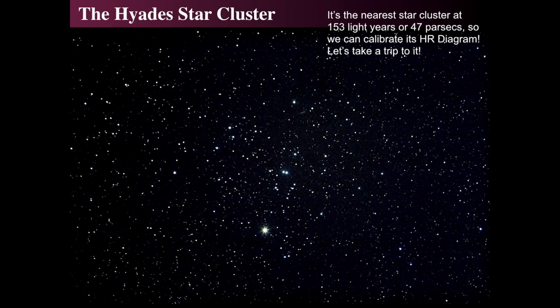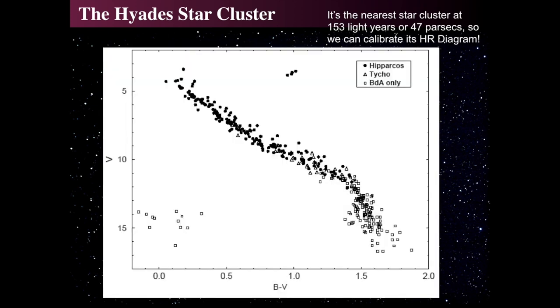The Hyades is approximately 153 light years away, or 47 parsecs. The real trick for getting the distance to the Hyades is determining which of the stars in the field are actually part of the Hyades. Extended studies for parallaxes and proper motions need to be done in order to determine who is a member. If we then calibrate and look at the Hipparcos data and the TYCHO data and combine them, filtering out all the stars that have roughly the same distance, same parallax, and same proper motion, we get what's known as a color-magnitude diagram for the Hyades.